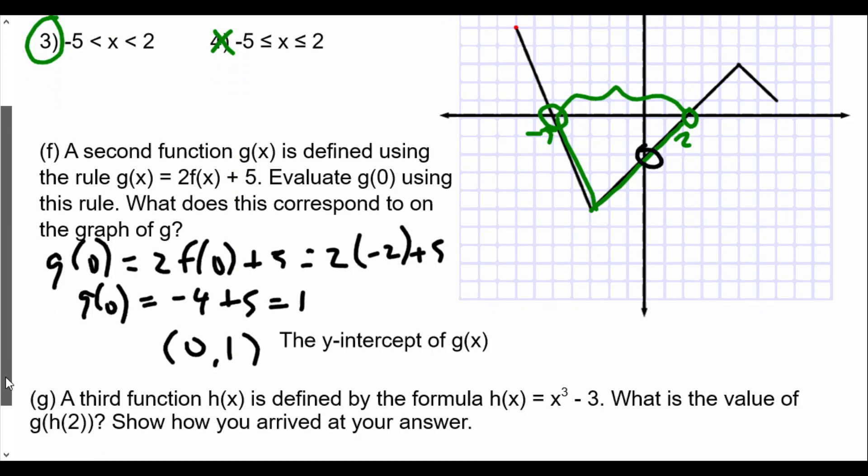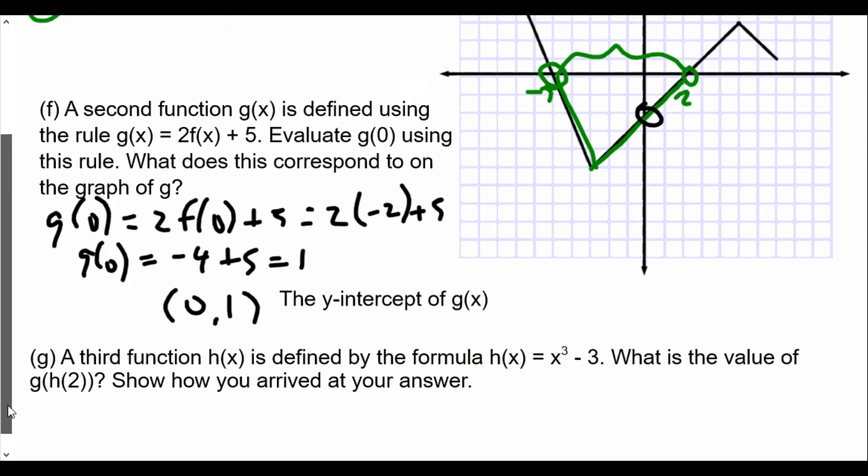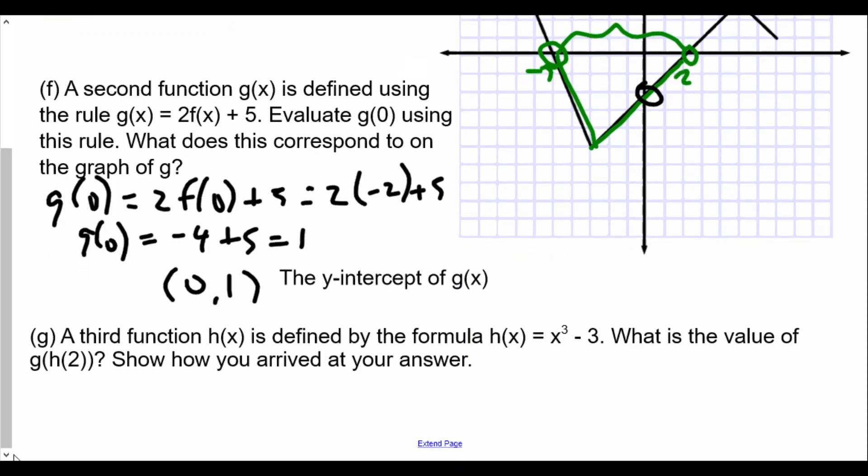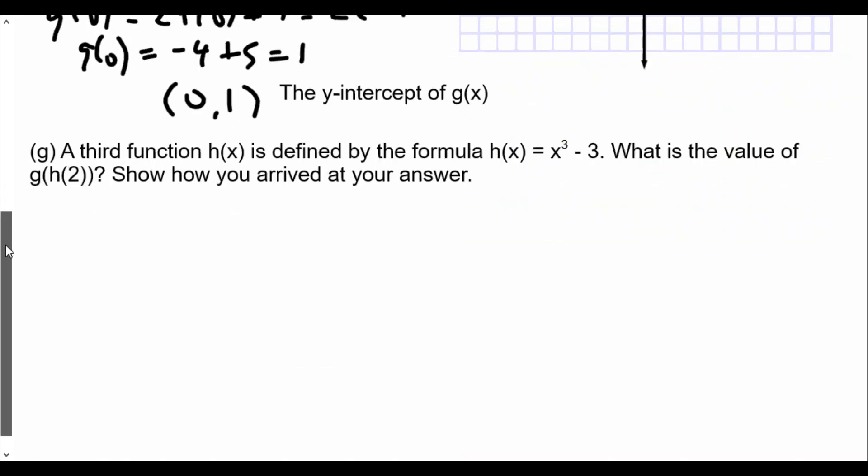And then finally, for the last part of question number one, this is a big question. A third function, h(x), is defined by the formula h(x) equals x³ minus 3. What is the value of g(h(2))? So here we go. This is a compositional function, so we got to set this up a little bit. To find g(h(2)), what we want to do is first find h(2). So h(2) really is going to be 2³ minus 3. So 2³ minus 3 is going to be 8 minus 3, which is 5.